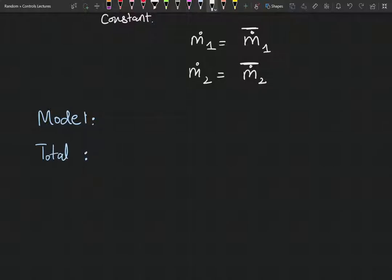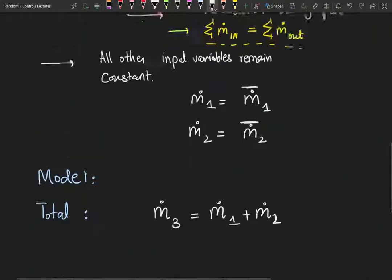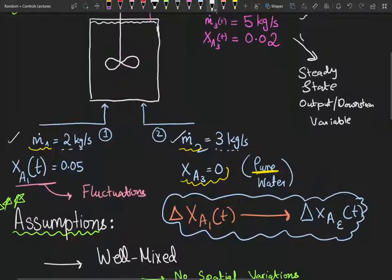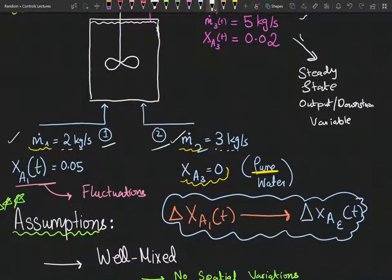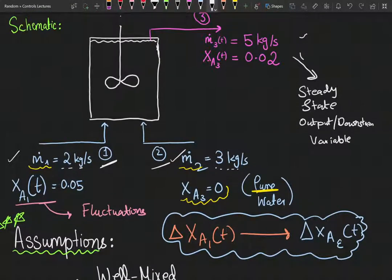We're going to start off by our total balance. Since it's an overflow system, our total mass balance is going to be m3 equals m1 plus m2. M1 and m2 both remain constant, which implies that the output also has to remain constant.